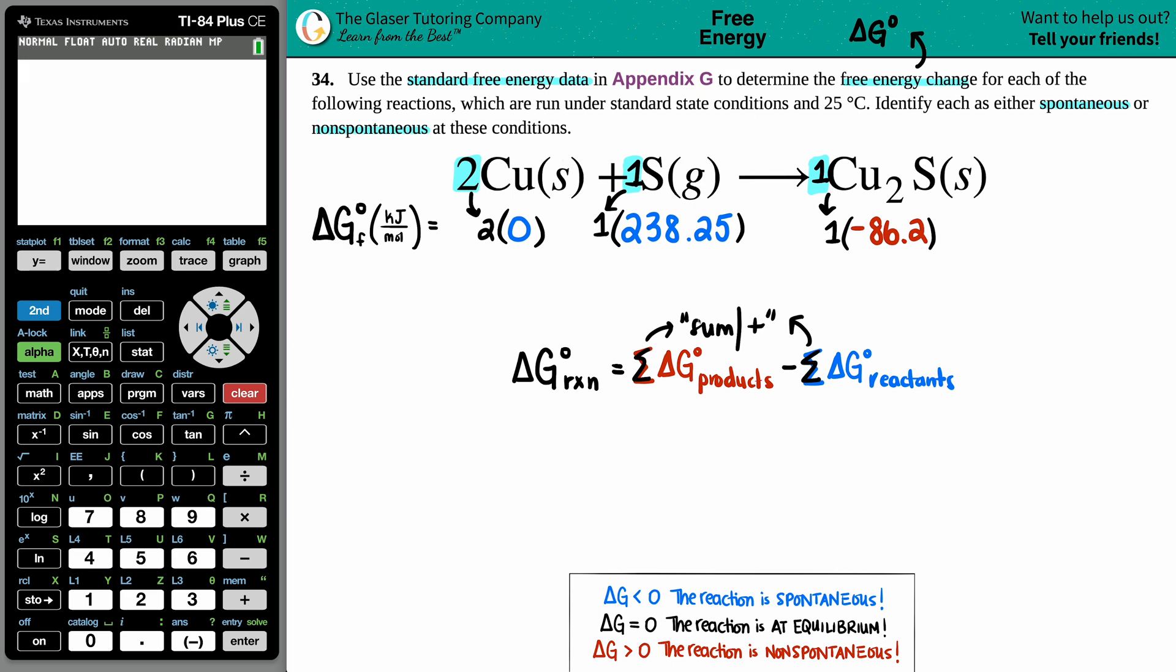Now we have to sum them up. Literally it's Cu solid plus S gas, so it'd be this number for the copper plus this number for the sulfur. I don't have to sum anything up on the product side because I don't have any other product. Here zero plus this number is just 238.25, and for the product side this would be negative 86.2.